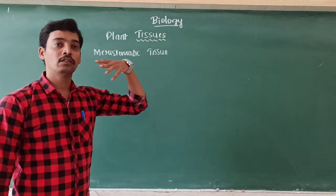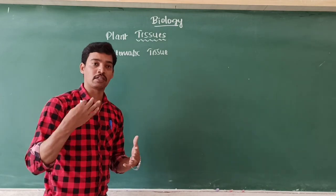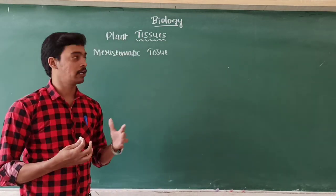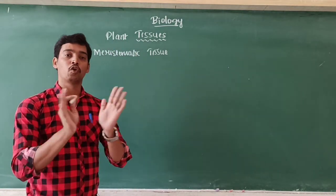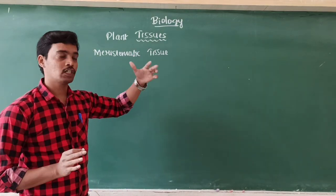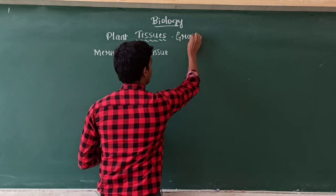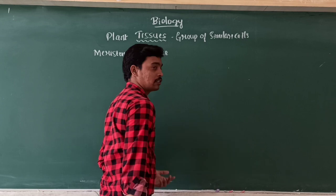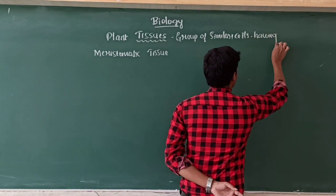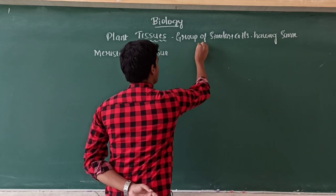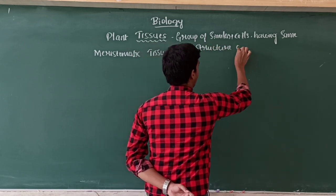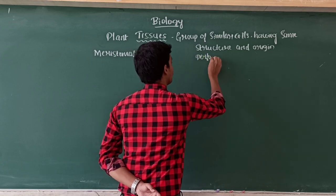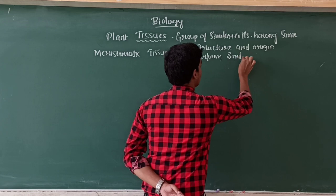First, what is tissue? We are already familiar with what is a cell. Cell is the structural and functional basic unit of the living organism. When we ask what is tissue, the simple answer is a group of cells. But the actual definition of tissue is: a group of similar cells having the same structure and origin that perform similar functions.